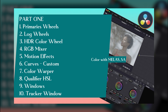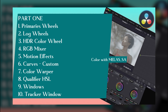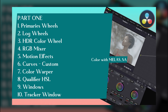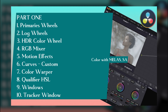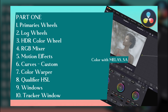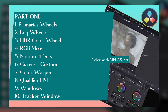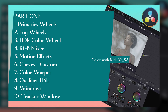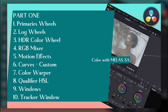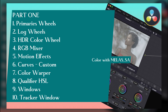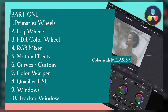Number one is the Primaries — Primary Wheels, Log Wheels, HDR Color Wheel, RGB Mixer, Motion Effect which is number five, Curves and Customs, Color Warper, Qualifier HSL, Windows, and the last is the Tracker Window. This is Part One of this course that I'm putting out right now.